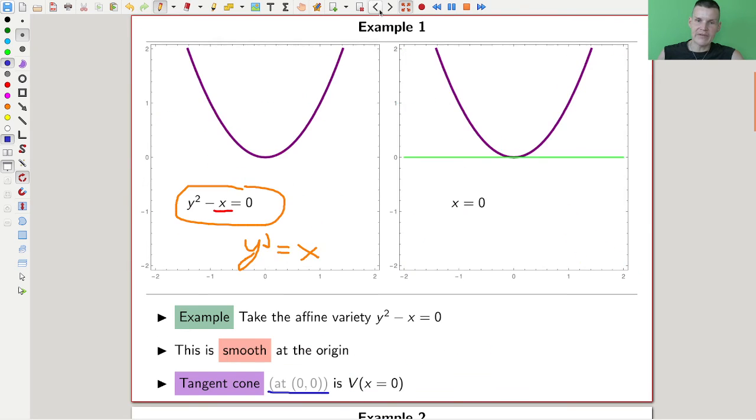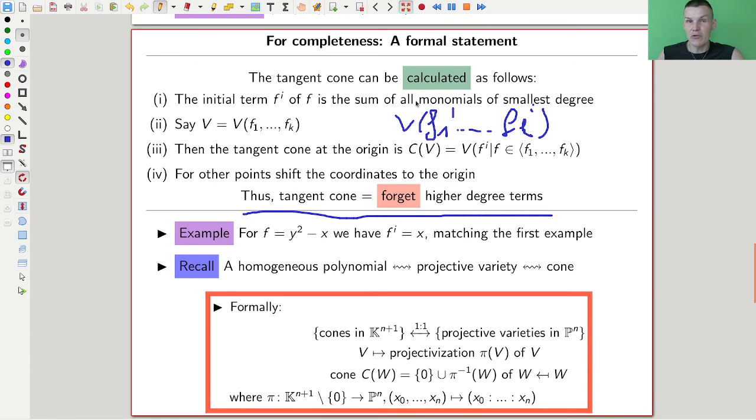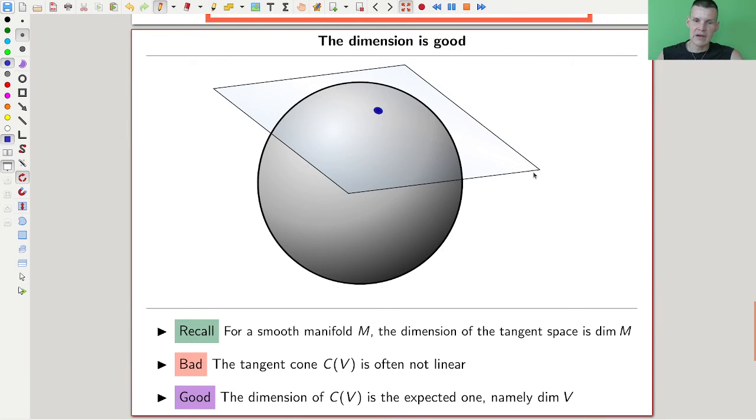So whenever it's really linear like here, it's just really the tangent. Otherwise it's still a good approximation onto your space. Yes, it's often not linear. It's still the best one.